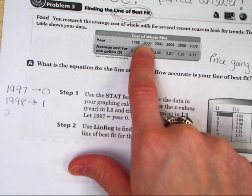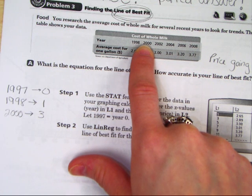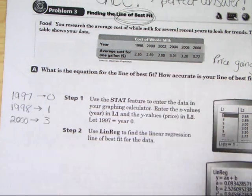When they did 1998, they had to let X be one. When they did 2000, they had to let X be three. So you just have to make sure that you find out what the quirks are. How are they changing the numbers? So they let 1997 equal zero.